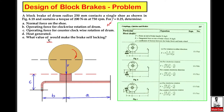If the drum is rotating in the clockwise direction, we draw the free body diagram of the lever on which the external force is to be applied. For clockwise rotation, the tangential frictional force ft acts in one direction, and for anti-clockwise rotation it acts in the opposite direction. Whatever the direction of rotation, the normal force fn acts towards the block material, and the operating force to be applied is called f.